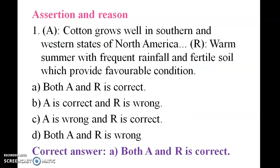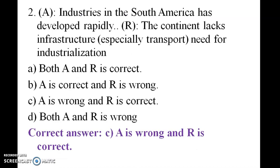Assertion and Reason: Cotton grows well in the south and western states of North America. Reason — warm summer with frequent rainfall and fertile soil provides favorable conditions. Both Assertion and Reason are correct.